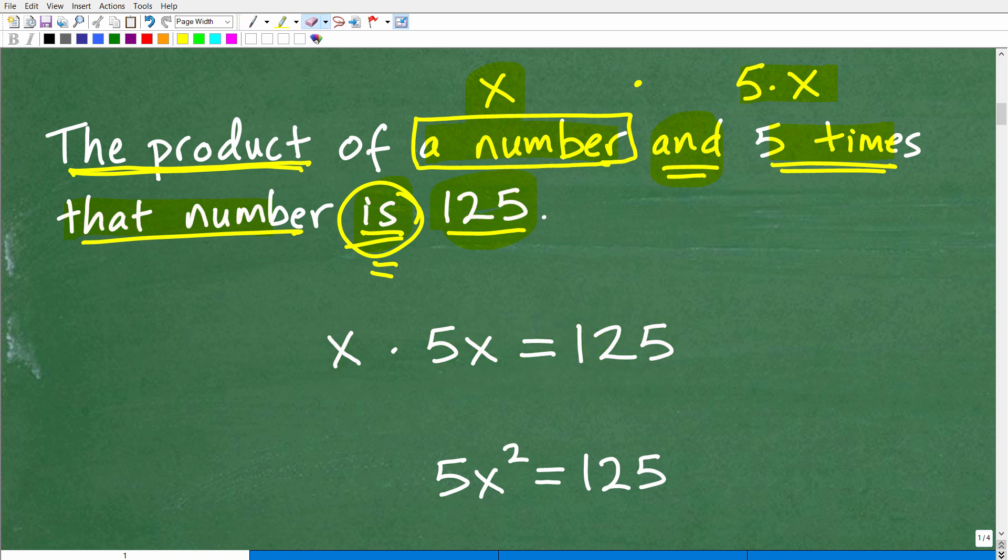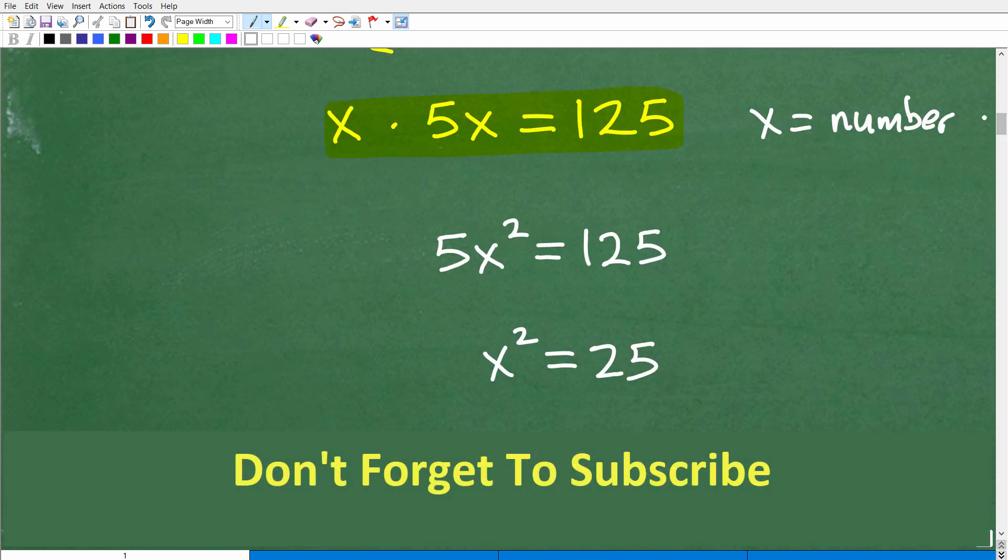So once we've translated this verbal phrase into a variable phrase or variable equation, now we just need to use our awesome algebra skills to solve for X because X is the number. Okay. The mystery number or numbers. So now let's go ahead and do that now.